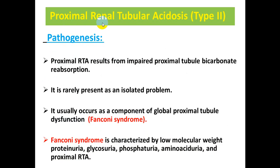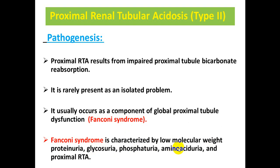I will start with proximal renal tubular acidosis, which is type 2 RTA. It is the common type and results from impaired bicarbonate reabsorption in the proximal convoluted tubules. It is rarely present as an isolated problem; it usually occurs as a component of global proximal tubule dysfunction, called Fanconi syndrome, which is characterized by low molecular weight proteinuria, glycosuria, phosphaturia, and amino aciduria.